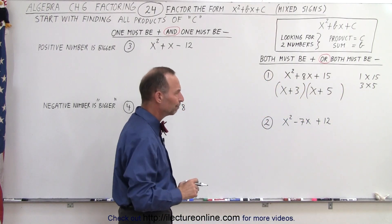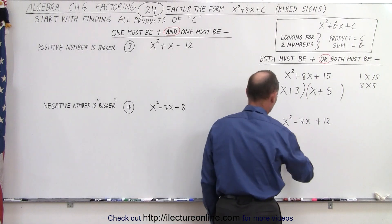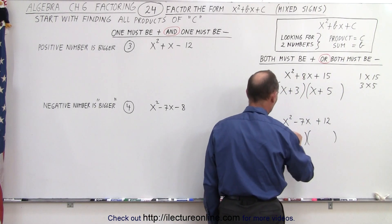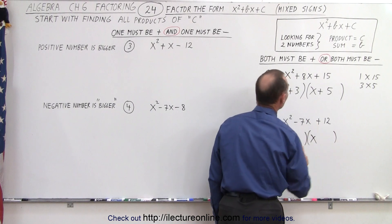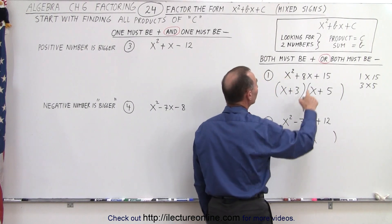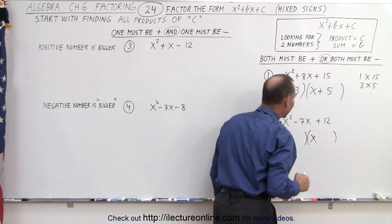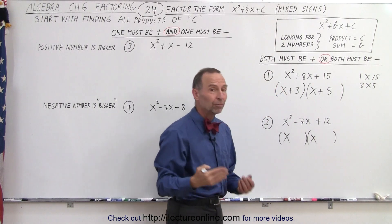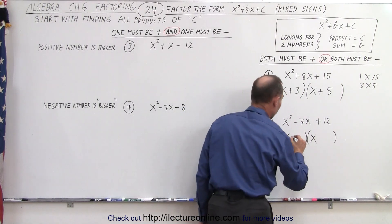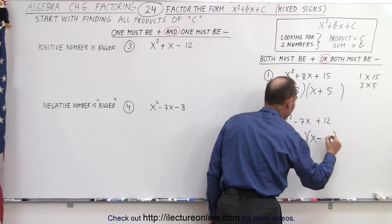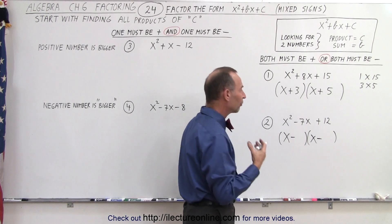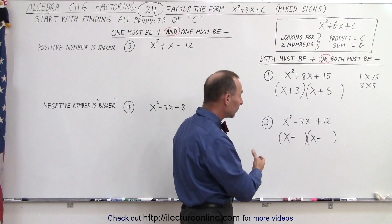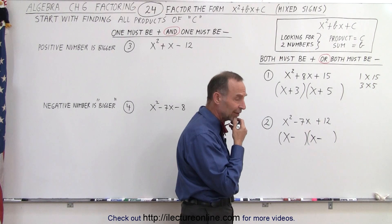How about the next one? We start out by writing the two binomials. We have an x and an x, but now notice either both are positive or both are negative, but since we have a negative middle term, that means both must be negative, so I need to draw two negative signs. Now I'm looking for two numbers. When I multiply, I get 12. When I add them together, I get negative 7.